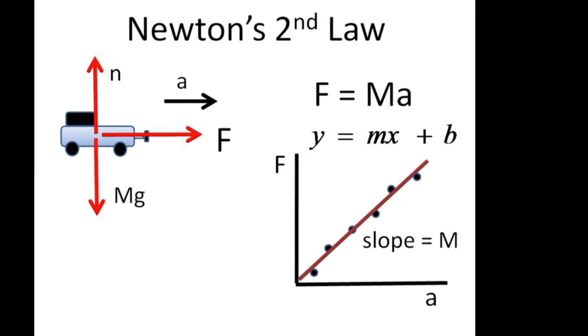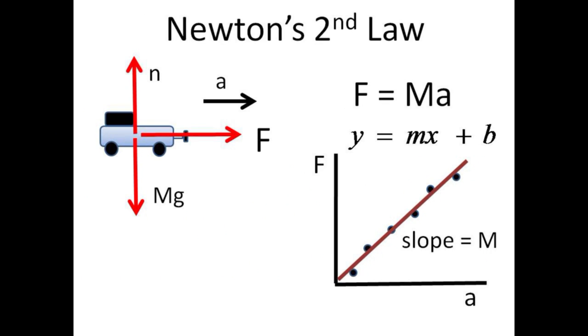A free body diagram of the cart reveals two vertical forces canceling each other. That is, the downward pull of gravity on the cart is cancelled by the upward normal force of the track on the cart. There is, however, an imbalance of force in the horizontal direction where the string causes the cart to accelerate.